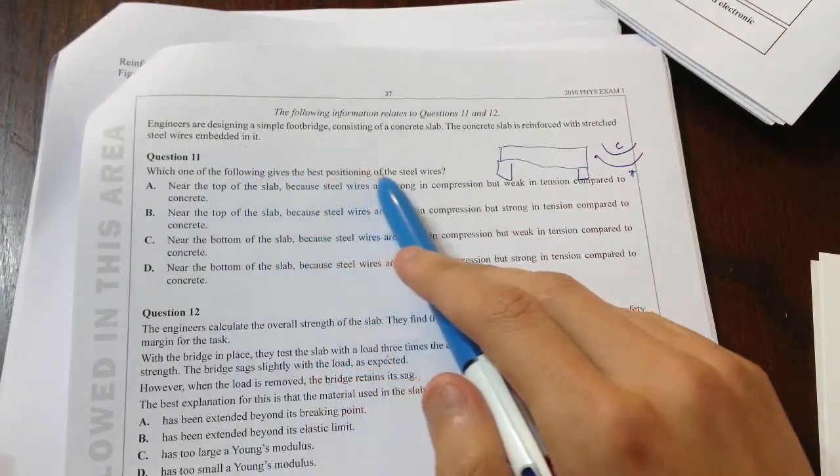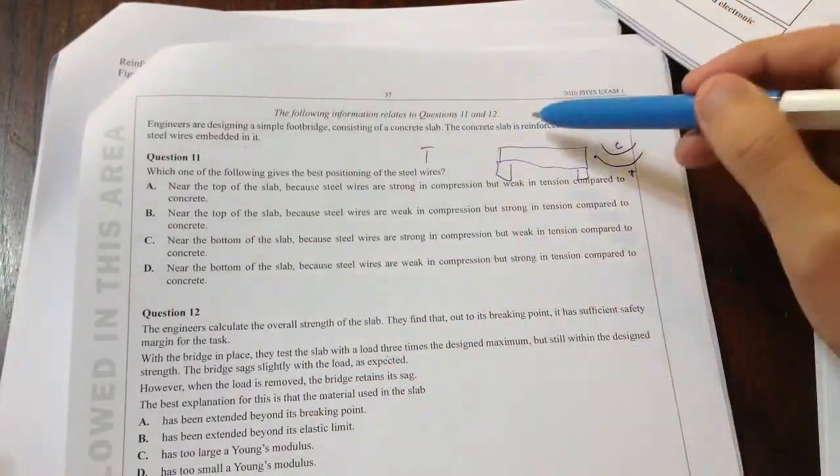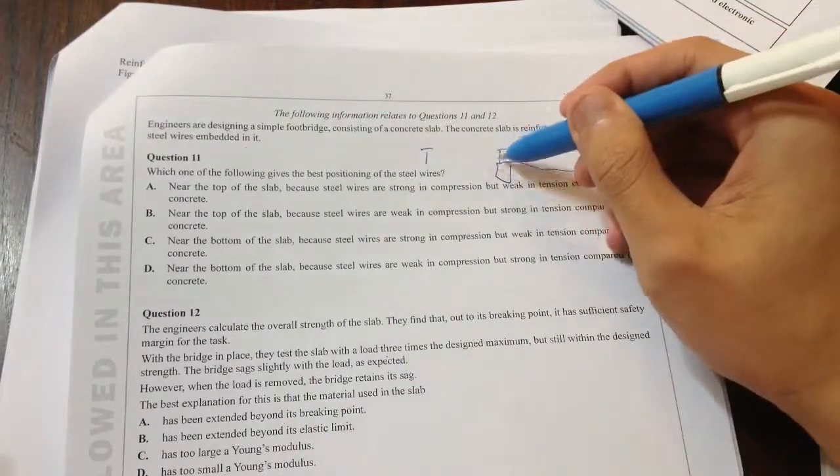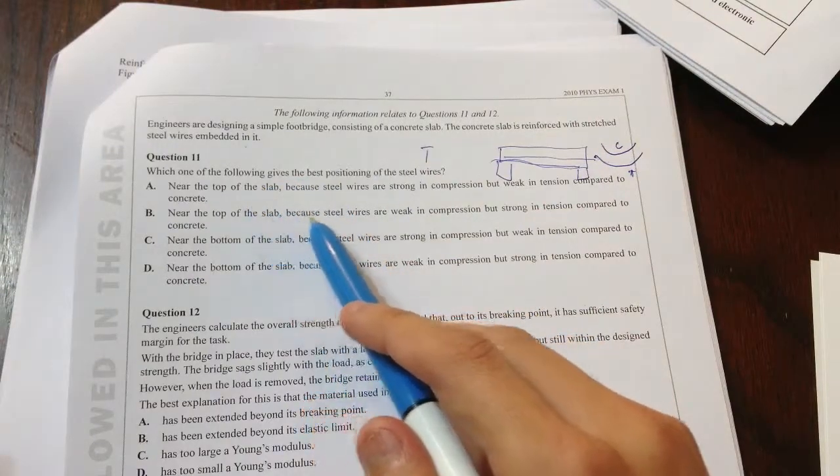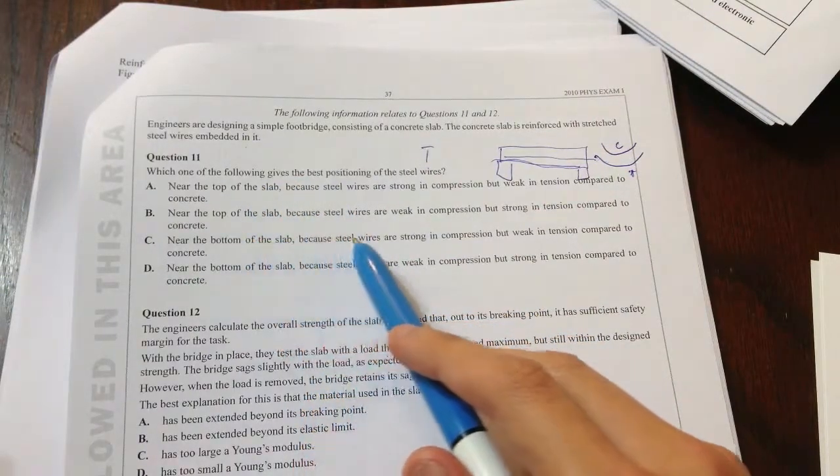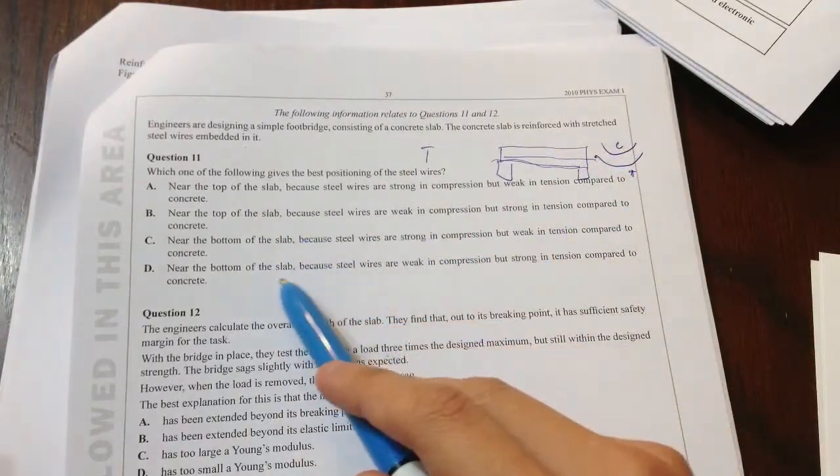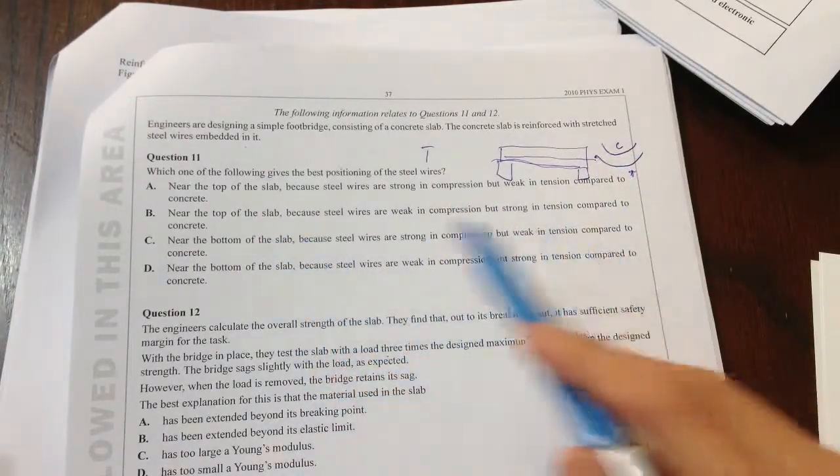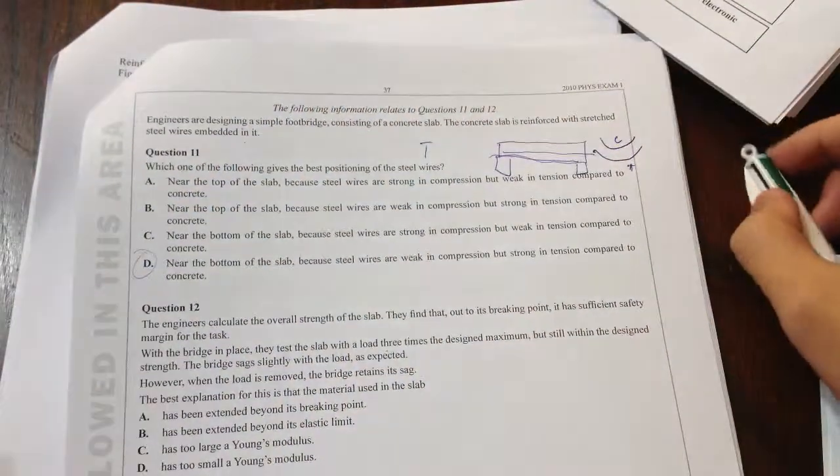Which one is the best positioning of the steel wires? So we want to put it where it's under tension. So really we just want to put it at the bottom. We want to put it at the bottom here. So we just need to look for that. Near the top? No. Near the top? No. Near the bottom. Because steel wires are strong in compression? No. Because they're strong in tension. Near the bottom because steel wires are strong in tension compared to concrete. D. And that's roughly how you do forces, shear, all these different things.